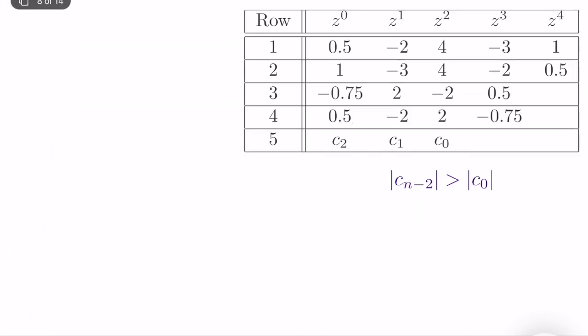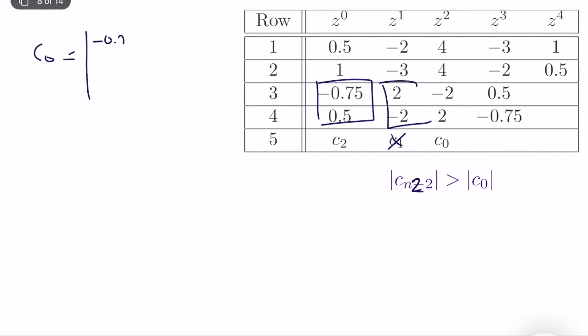We now compute b1 and b2 to complete the b rows, then move on to c's. The full set of b coefficients is filled into the table. The remaining condition to check involves c0 and c2. To compute c0, we pick the first and second columns of the b rows. c0 equals the determinant of [0.75, 0.5; -2, ...], which works out to approximately -2. Wait — correcting that: c0 is equal to 0.5.